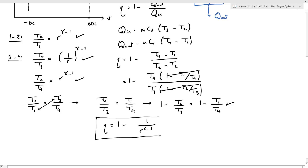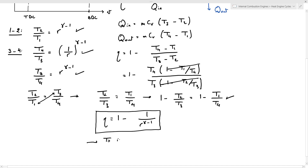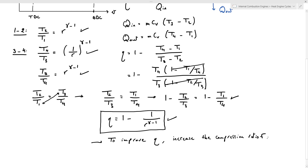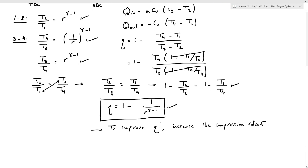Looking at the indicated thermal efficiency equation, we can easily conclude that in order to improve the thermal efficiency of an Otto cycle we can simply increase the compression ratio R. However, in actual spark ignition engines, for very high compression ratios the temperature of the air and fuel mixture may rise above the auto-ignition temperature of the fuel.